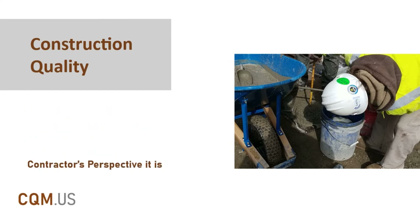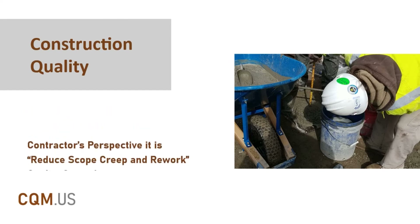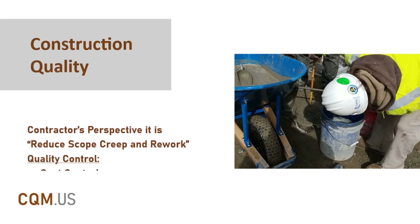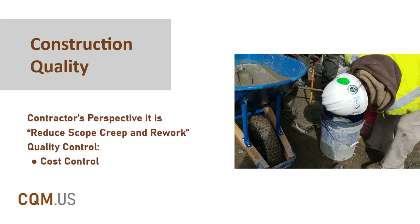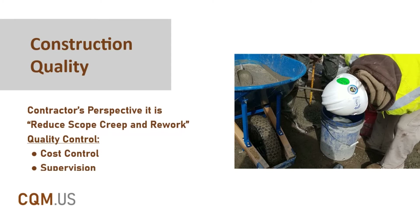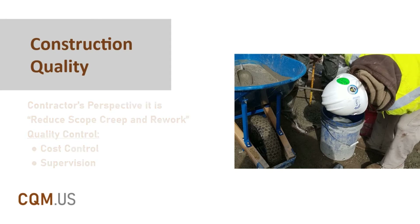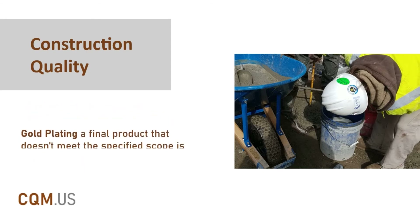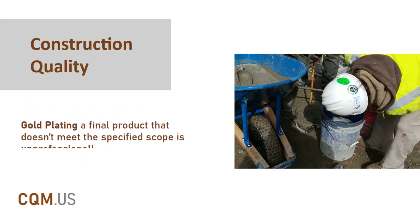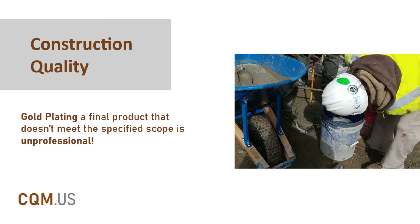If you are talking about construction quality from the contractor's perspective, it is to reduce scope creep and rework — meaning don't do more than what you have to and do everything right the first time. So for the contractor, cost control and supervision for quality control are more important. From PMBOK's perspective, any work over the specified scope is scope creep, and the intention of gold plating a final product that doesn't meet the specified scope is unprofessional.